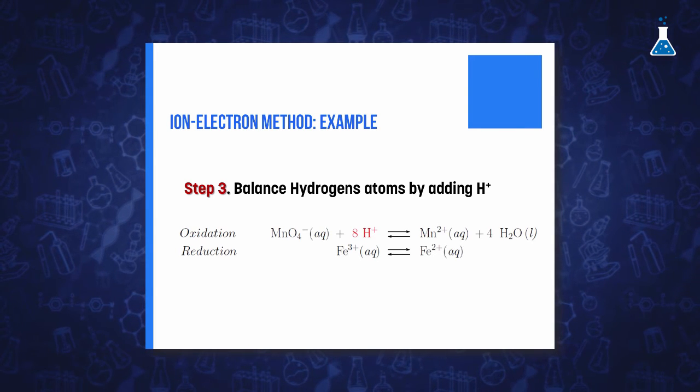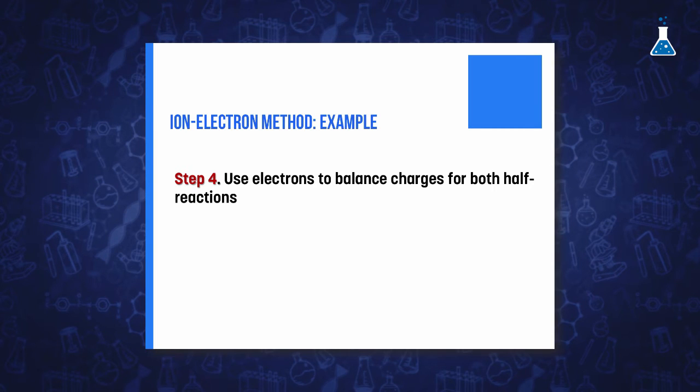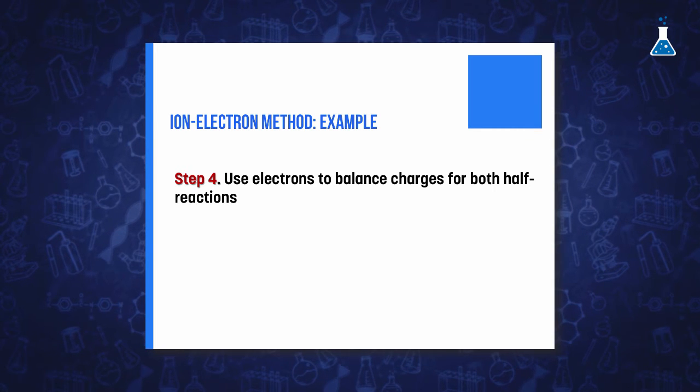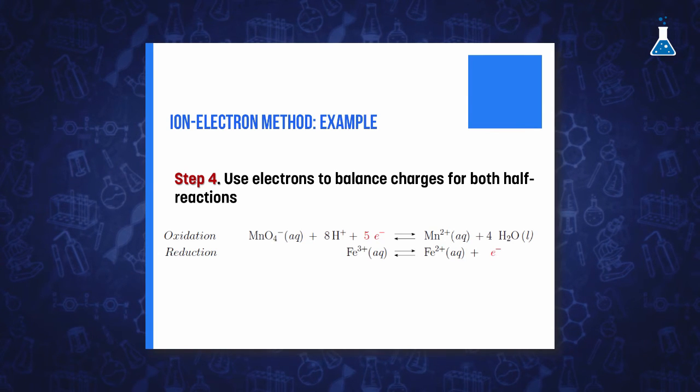In addition, we use electrons to balance the net charge of both half-reactions. Electrons should be on opposite sides of the two half-reactions.